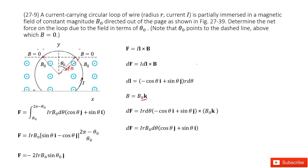So DL = R·dθ. We can project DL into the x-direction and y-direction. Projecting gives us negative cosine θ in the x-direction plus sine θ in the y-direction. Now compute DL cross B and put it in, then simplified, you get the expression for DF as a function of dθ.